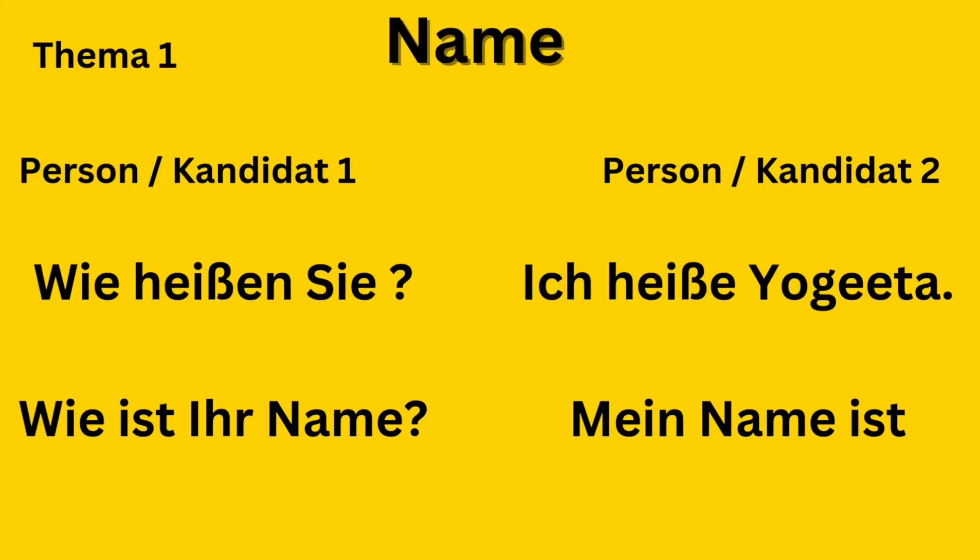In this Teil we have two candidates — Person 1 and Person 2. For Theme 1 (Name), you can ask: Wie heißen Sie? You can simply answer: Ich heiße Yogita. Or you can ask: Wie ist Ihr Name? And the answer can be: Mein Name ist Yogita. These are very basic questions you have already done in A1 or A2.